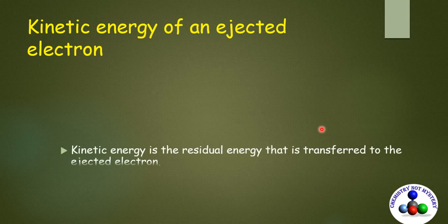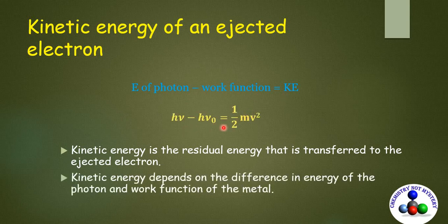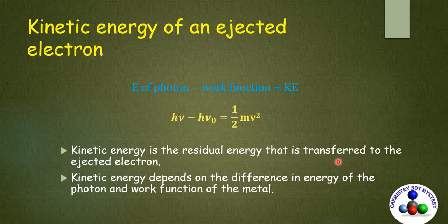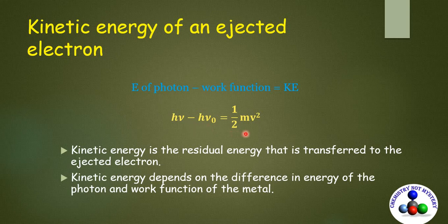Energy of photon minus work function is equal to kinetic energy. So by using this equation, we can calculate the kinetic energy of an ejected electron. Kinetic energy is the residual energy that is transferred to the ejected electron. And kinetic energy depends on the difference in the energy of photon and the work function of the metal. So greater the difference, the more will be the kinetic energy.